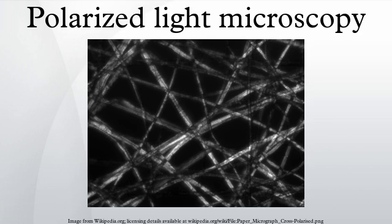Polarized light microscopy can mean any of a number of optical microscopy techniques involving polarized light. Simple techniques include illumination of the sample with polarized light. Directly transmitted light can, optionally, be blocked with a polarizer orientated at 90 degrees to the illumination. More complex microscopy techniques which take advantage of polarized light include differential interference contrast microscopy and interference reflection microscopy.